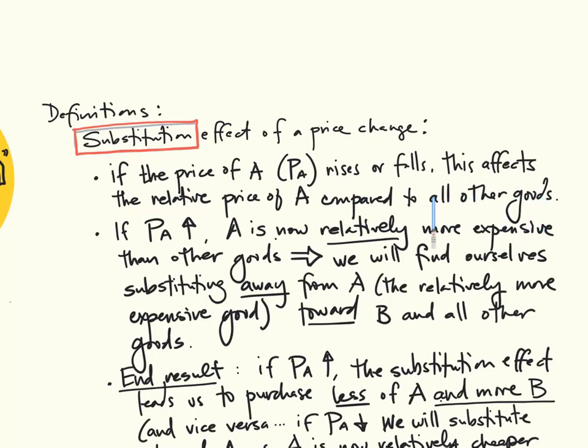You think about broccoli, that's one thing you buy, but you also buy lettuce, ice cream, and toilet paper. So, the price of broccoli changing has an effect on the relative attractiveness of broccoli to everything else.